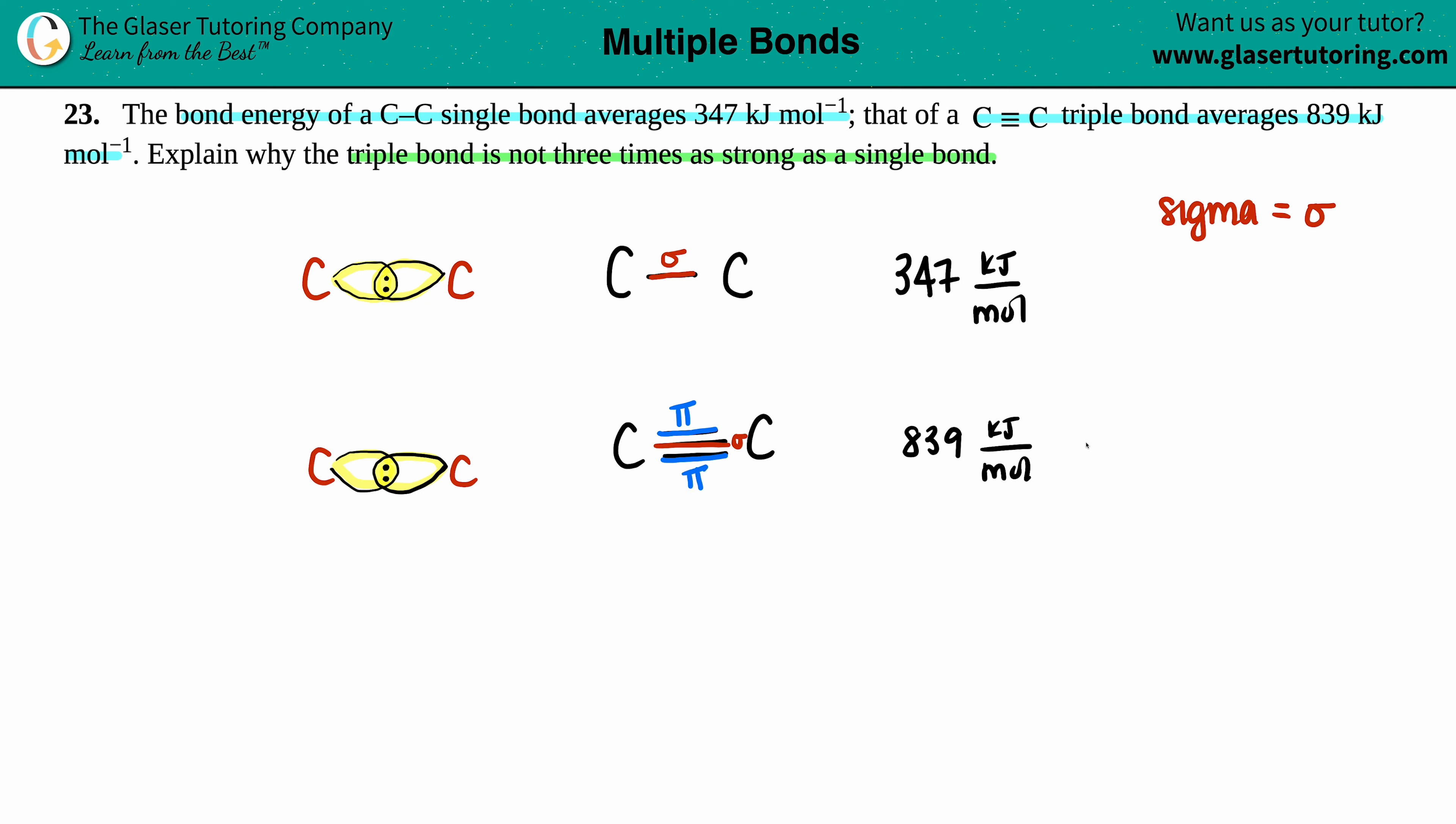So in a triple bond, you have, maybe I'll put it over here. For a triple bond, you have one sigma and two pi. For a single bond, you have one sigma.